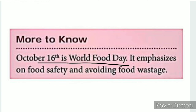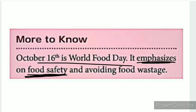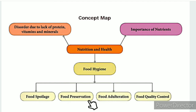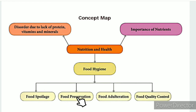More to know: October 16th is World Food Day. Food safety and avoiding food wastage are important. To summarize: food spoilage has internal and external factors. Methods of food preservation include drying, smoking, irradiation, cold storage, freezing, pasteurization, and canning.